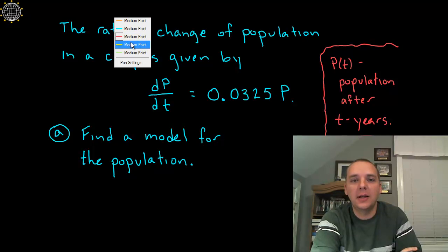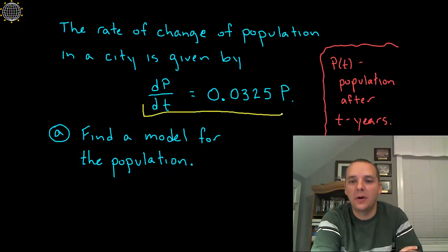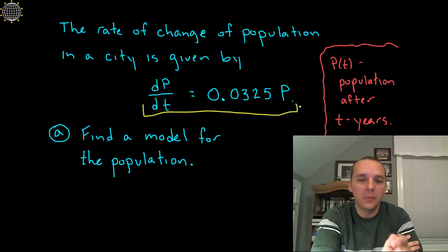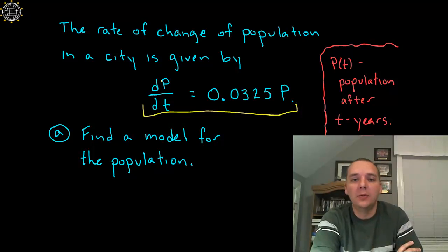Alright, so when we see something like this, bells and whistles should go off in our head. This is something hinting at exponential growth, and here's how I know that. Exponential functions, namely like e to the x, is one of the only functions whose derivative looks roughly like the original.